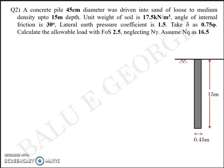We'll move to the next question. You have a concrete pile almost of the same dimension, now precisely the same dimension: 45 centimeter diameter is installed up to 15 meter depth but not in clay, in sand. The unit weight is given 17.5 kN per meter cube. Angle of internal friction is 30 degrees. Lateral earth pressure coefficient is 1.5. You're asked to take the delta, the interface angle, as 75 percent of internal friction phi or delta is equal to 0.75φ.